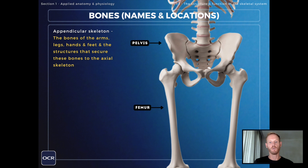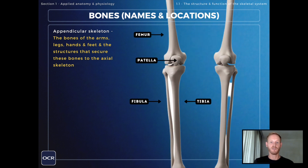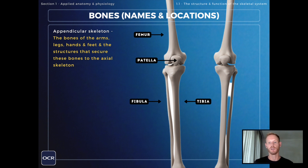Moving on to the hip joint, we have the pelvis which articulates with the femur — the longest and largest bone in the human body. At the knee joint the femur articulates with the tibia, which is the larger of the two bones in the lower leg, the other being the fibula. The fibula doesn't actually articulate at the knee joint — the head of the fibula sits just below the head of the tibia, so it's the tibia and the femur that make up the knee joint. The other bone here is the patella or kneecap, which protects the internal structures of the knee joint and provides a little bit of stability as well.